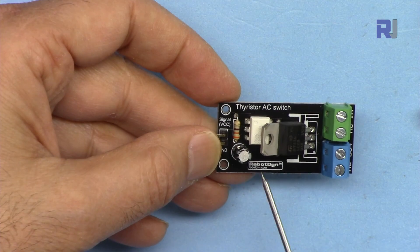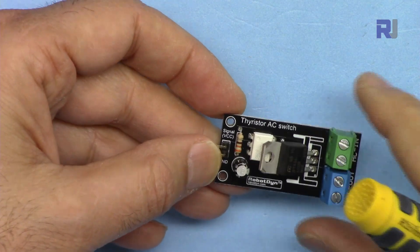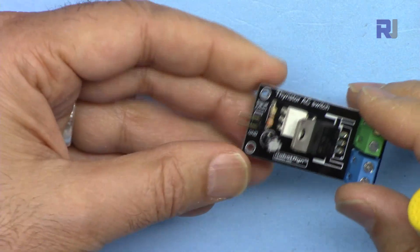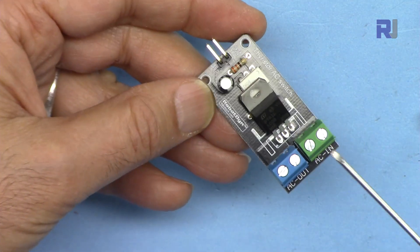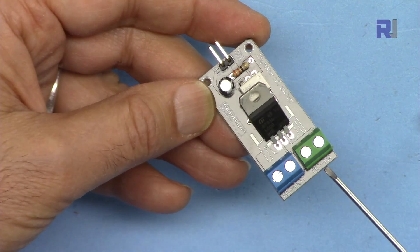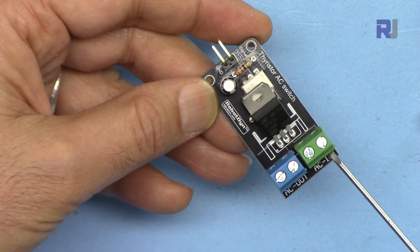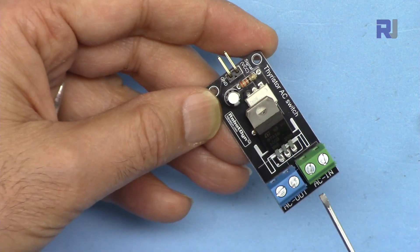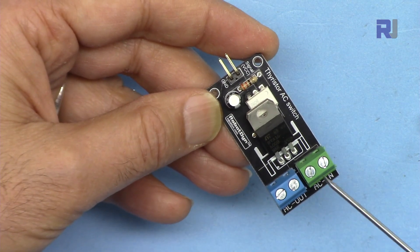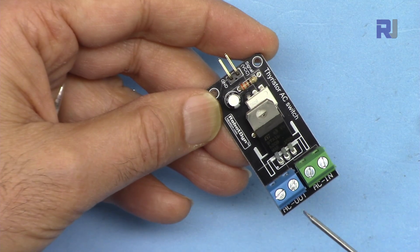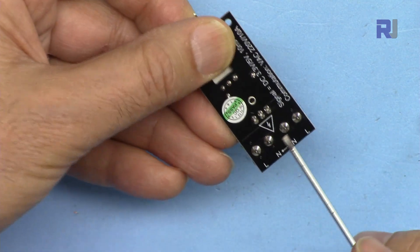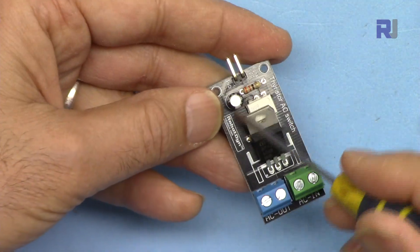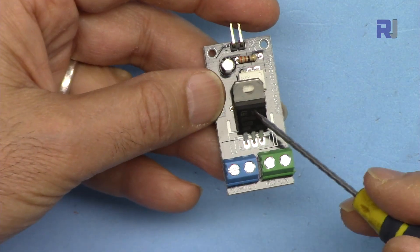This is a module by RobotDyne and it's made very nicely with proper documentation. We have two terminals here for N - you will connect your AC live here and the neutral to this pin. The neutral goes directly through, they are connected here together, and the live will go through this triac, this is a BTA16-600.